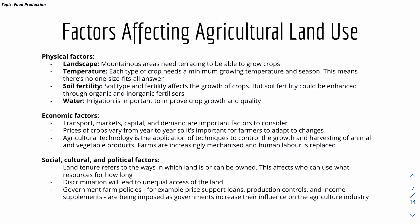Factors affecting agricultural land use include physical, economic, and social/cultural/political factors. Physical factors include landscape — mountainous areas need terraces to grow crops — temperature, because certain crops need specific temperatures, soil fertility, which determines how much fertilizer is required, and water, where irrigation is important to keep crops hydrated and improve crop growth and quality.